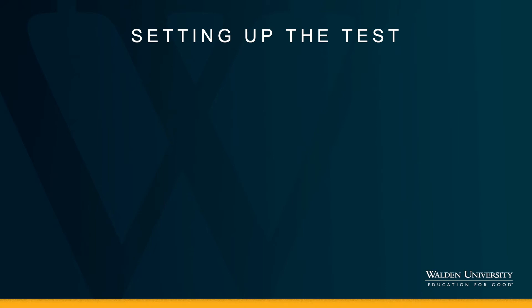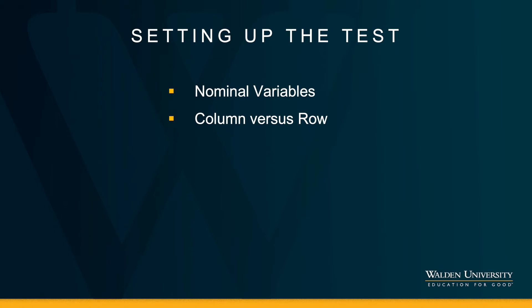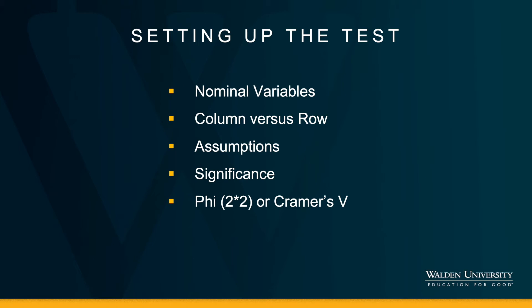In SPSS, we will work with nominal variables, entering one into the column and the other into the row because we're building a cross-tab. Though this is a relationship test, the literature says it's better to put the outcome variable in the column. We'll evaluate significance as always, then interpret the effect size. This test comes with two effect sizes based on the size of the table: if both variables have two levels, we have a 2x2 table and interpret phi; if the table is a different size, we interpret Cramer's V.